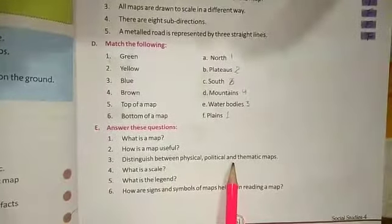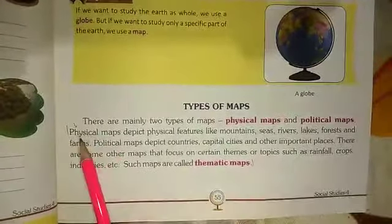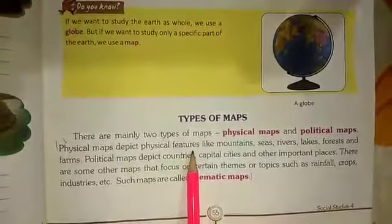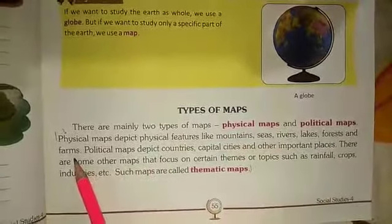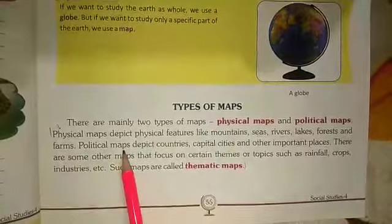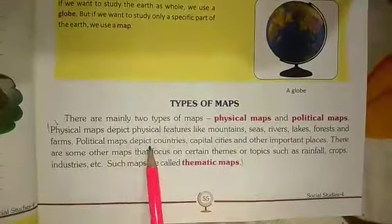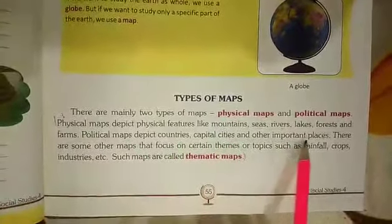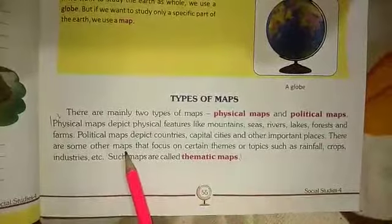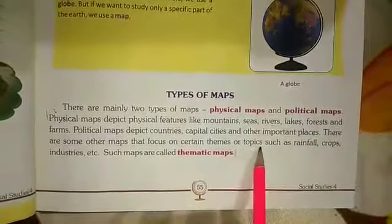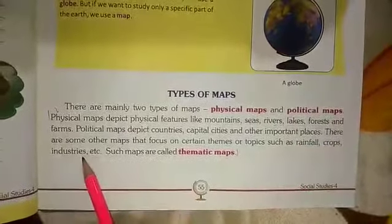3. Distinguish between physical, political and thematic maps. Here is the answer. On the same page 55. First, you write about physical maps. Physical maps depict physical features like mountains, seas, rivers, logs, forests and farms. Political maps depict countries, capital cities and other important places. Thematic maps focus on certain themes or topics such as rainfalls, crops, industries, etc.